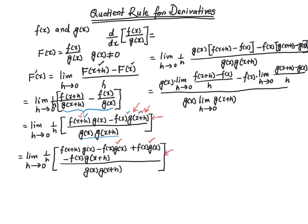That gives me this. Now, from the first two terms I'm going to factor out g of x. If I do that, I get f of x plus h minus f of x — which is starting to look like the derivative expression. From the second two terms, I'm going to factor out negative f of x, which leaves me with g of x plus h minus g of x. The 1 over h is right there, and the denominator is still g of x times g of x plus h.